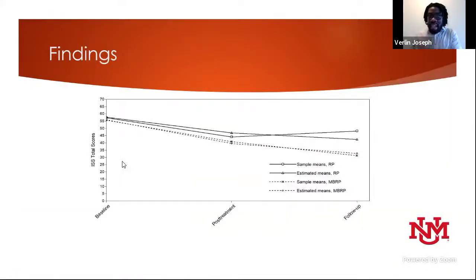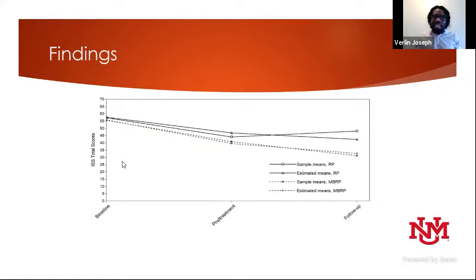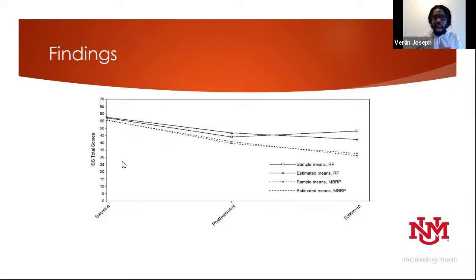Over the duration of the study, stigma was reduced in both groups; however, we did not find statistically significant differences between the groups, meaning our data does not suggest one treatment reduced stigma better than the other. Treatment stigma was reduced in both groups over time. After 15 weeks, women who received mindfulness-based relapse prevention reported fewer drug use days and reductions in legal and medical problems.